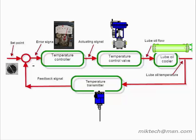Error signal is processed in the controller to produce actuating signal. Processing involves proportional, integral and derivative action. The control valve responds to actuating signal and manipulates the lube oil flow to cooler.